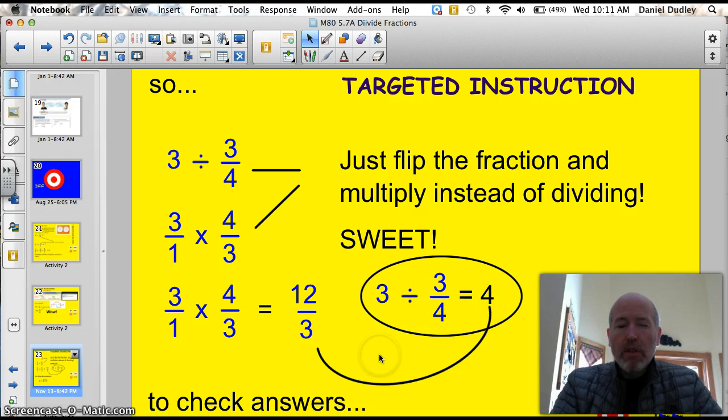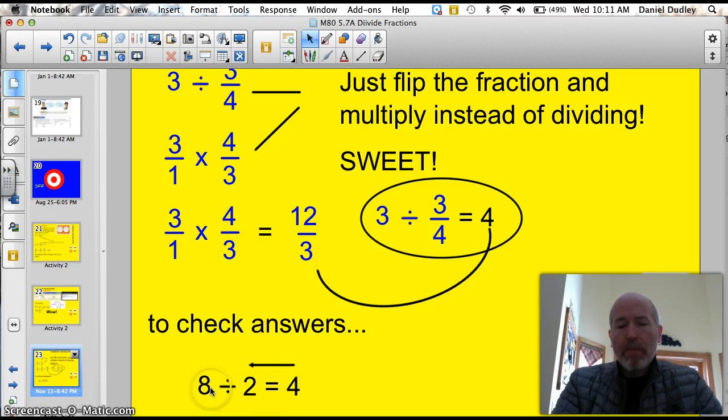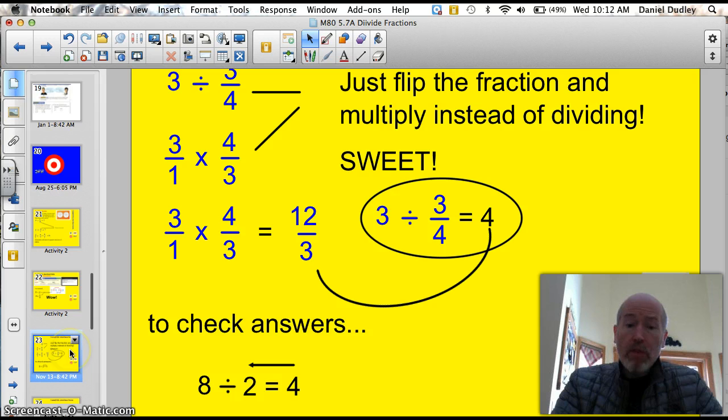Right? So, how do you check the answer? Well, let's go back to this 8 divided by 2 problem. You might remember in your elementary school, somewhere, a fourth and fifth grade teacher said, 8 divided by 2 equals 4. You can read backwards to check. 4 times 2 equals 8. Right? I knew you'd remember. You can do the same thing here. 4 times 3 fourths equals 3.